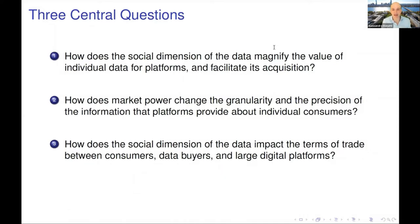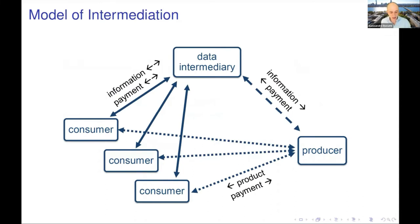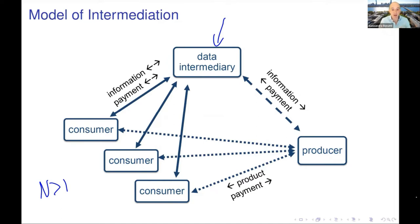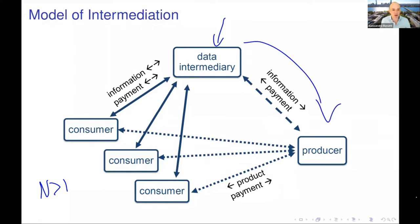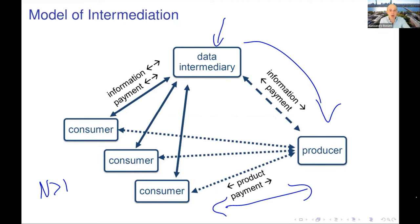In a picture, this is our model. There are critically more than one consumer, and they will exchange information and money with a single data intermediary. Information can go both ways: I can tell the platform something about my preferences, and they can provide me recommendations. The data intermediary monetizes on the producer side — they sell this information to a single firm. This firm, the producer, has an independent interaction with the consumers downstream, selling them a product. The question is how that interaction will be informed by the data acquired from the intermediary.